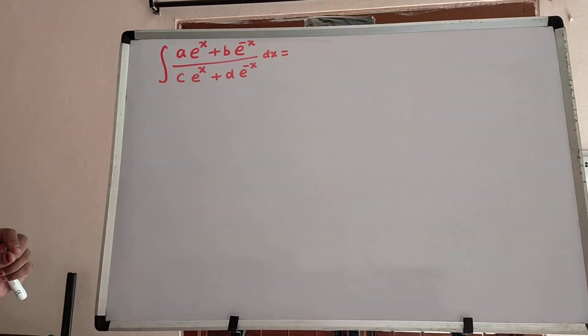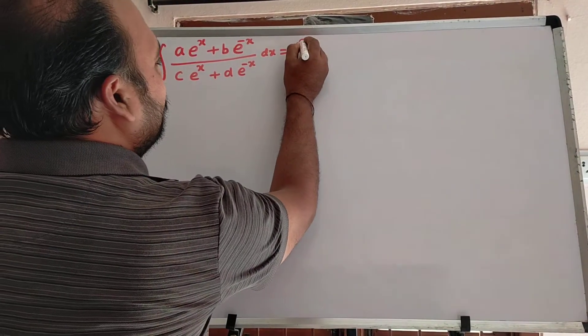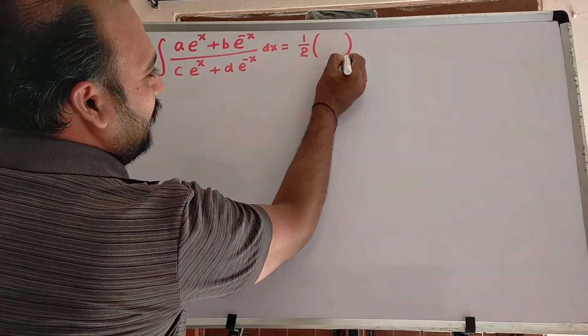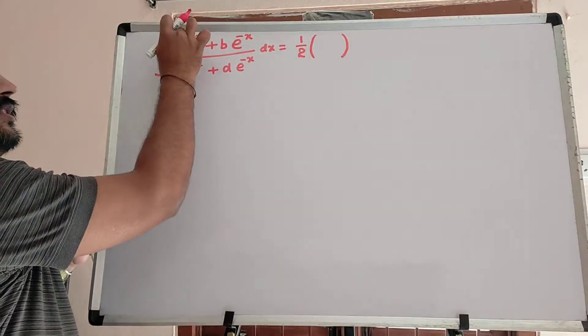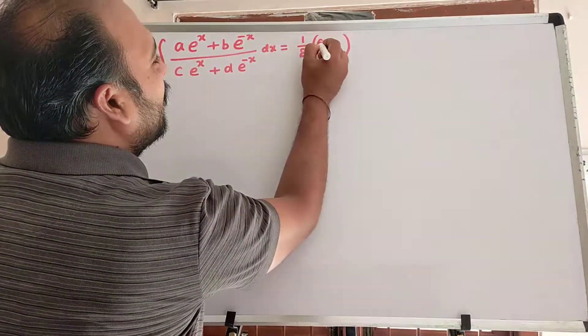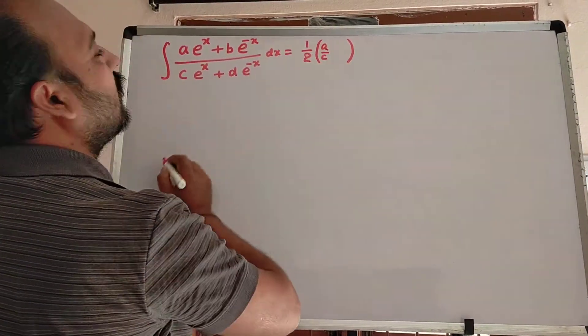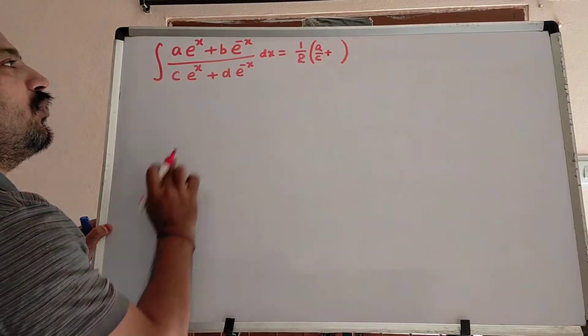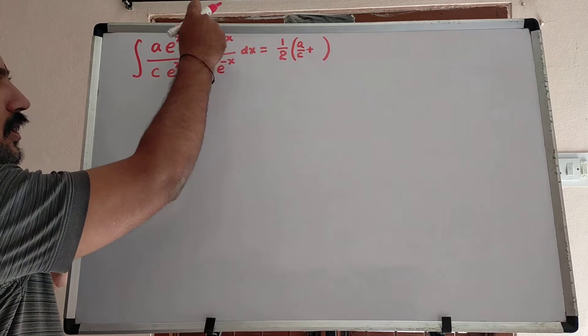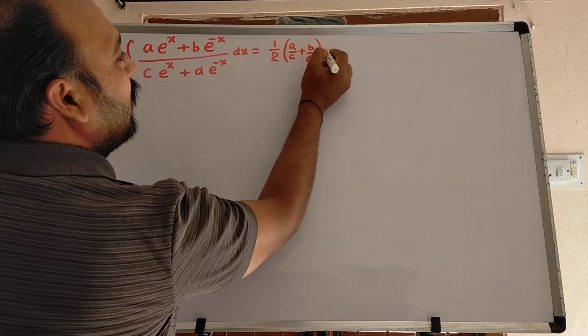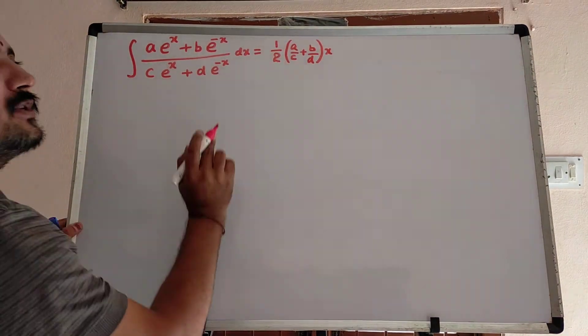How to write that answer? Here also same, 1 by 2 into key bracket e power x coefficient in both numerator and denominator like this, you have to write a by c and here plus is there. Plus only, write it. After that, e power minus x coefficient in numerator and denominator, you have to write b by d into x.